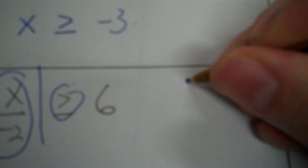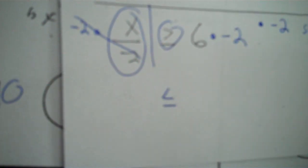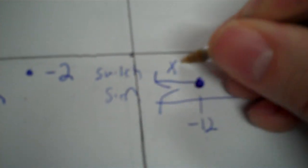Next problem: x divided by negative 2 is greater than or equal to 6. The operation is division, so circle division. To undo division, multiply by negative 2. When you multiply by a negative, you flip the sign. So the sign switches. That cancels on the left, and 6 times negative 2 is negative 12, giving x less than or equal to negative 12. Variables come first, so no reordering needed. Close the circle and shade to the left.